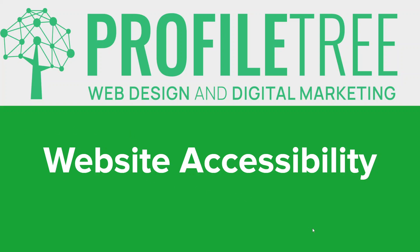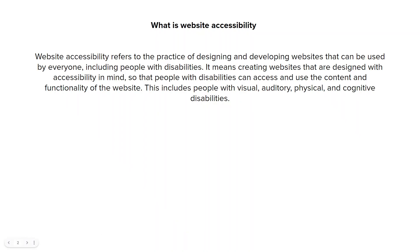Hi everyone, hope you're all well. In today's video we're going to talk about website accessibility. So what is website accessibility? Website accessibility refers to the practice of designing and developing websites that can be used by everyone, including people with disabilities. It means creating websites that are designed with accessibility in mind so that people with disabilities can access and use the content and functionality of the website.